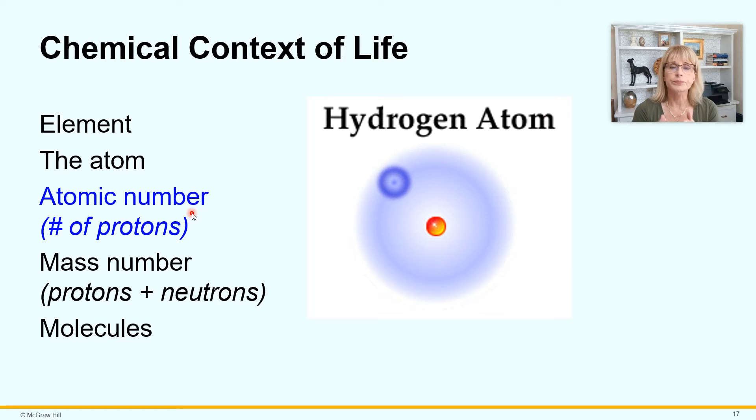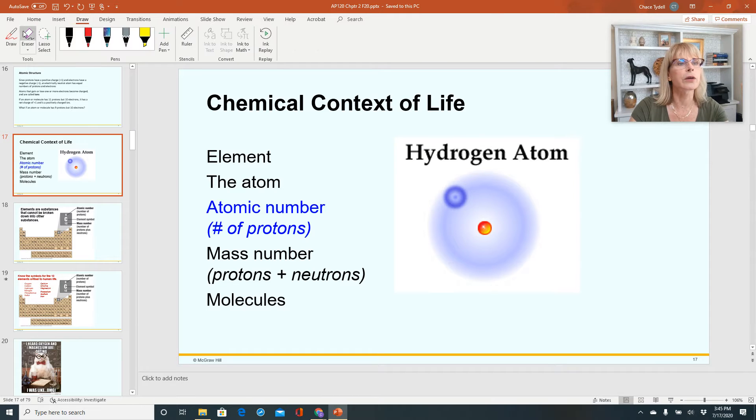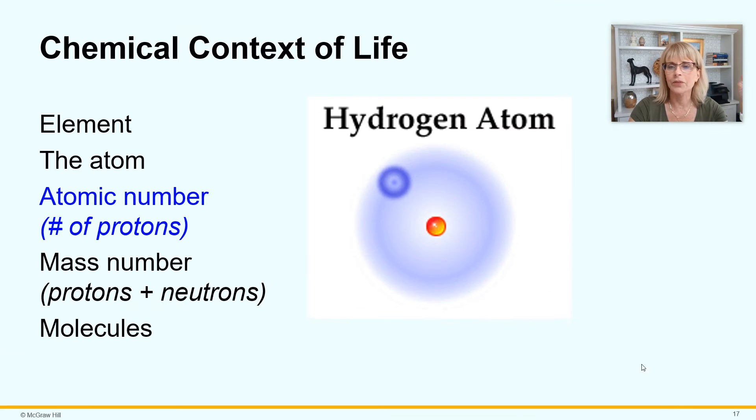The mass number is going to be the number of protons plus the number of neutrons. When it comes to how much something weighs, the mass of it for a certain number of its atoms, you add up the number of protons and the number of neutrons. Do the electrons weigh something? They weigh something, but they don't weigh very much.